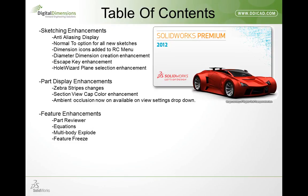Feature freeze works in the reverse of rollback. In the past, when a part took forever to rebuild, we'd roll back to the beginning of the model, make changes, and pay the time penalty once. But if your changes need to happen at the end of the tree — like adding fillets to lofted surfaces — no amount of rolling back improves performance. You were stuck waiting for SolidWorks to rebuild, or saving the part as a parasolid and losing your history altogether.